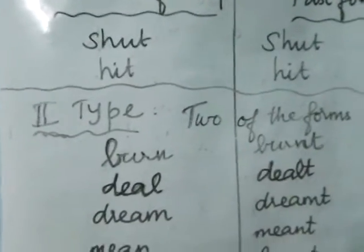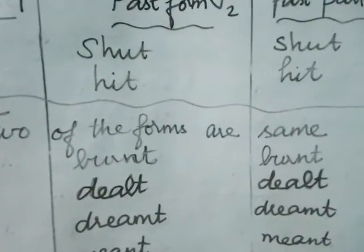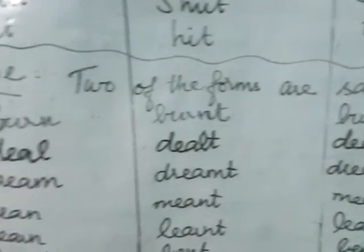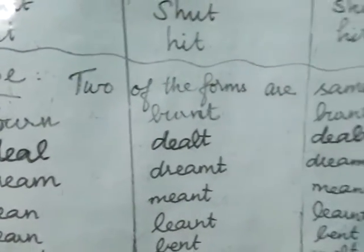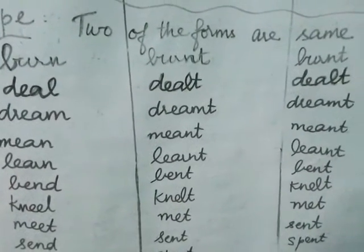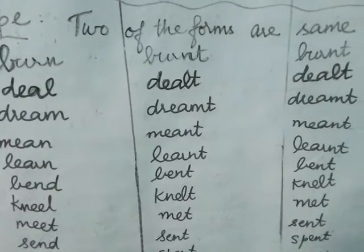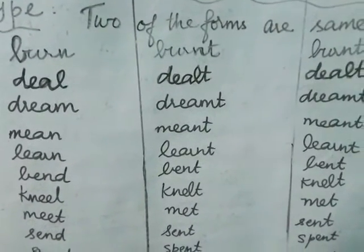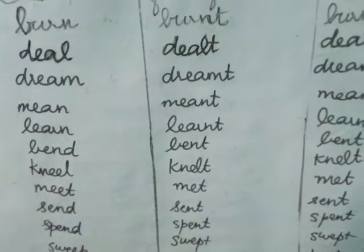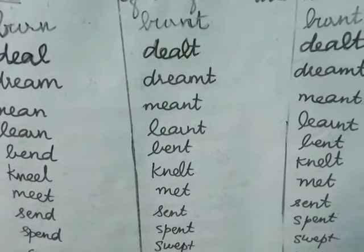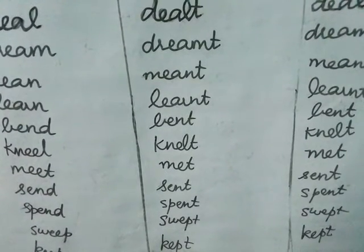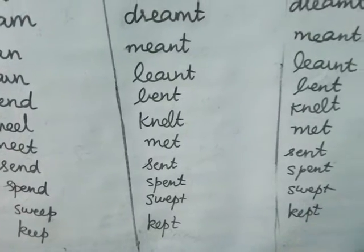Second type: two of the forms are the same — the past form and past participle are the same. Examples: burn, burnt, burnt; deal, dealt, dealt; dream, dreamt, dreamt; mean, meant, meant; learn, learnt, learnt; bend, bent, bent; melt, melt, melt; meet, met, met; send, sent, sent; spend, spent, spent.